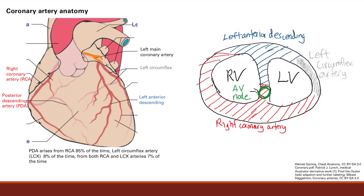That's going to branch out into first the left circumflex, which supplies the lateral wall of the left ventricle. And then the left anterior descending, which goes down the anterior wall of the left ventricle.